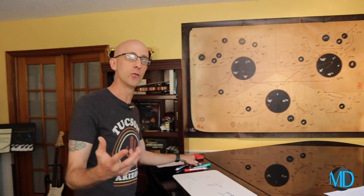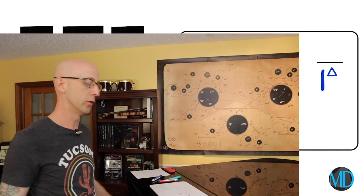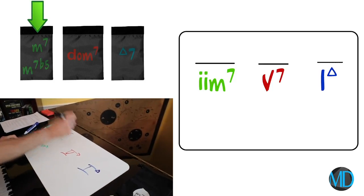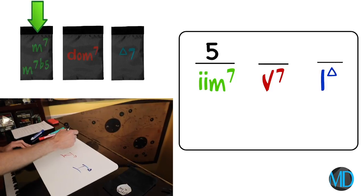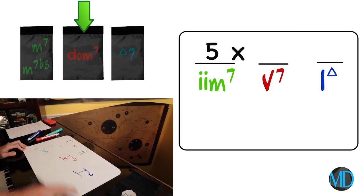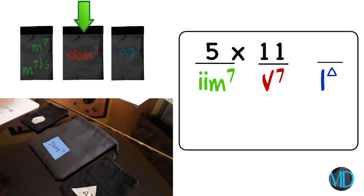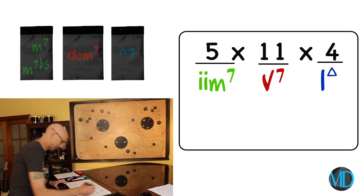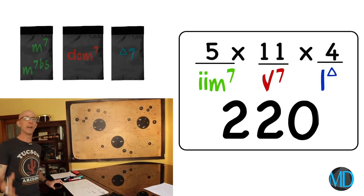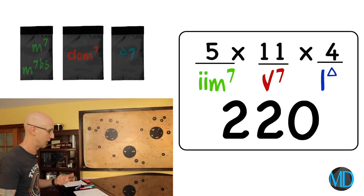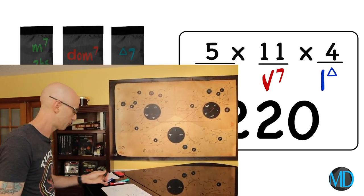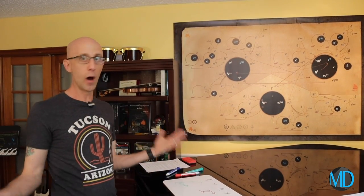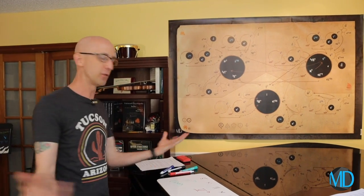If I do some math: five upper structures in that bag, eleven in the dominant seven bag, and four in the major seven bag, we get 220 options with just three chords and the upper structures we can pair with them. Let's go over to the piano and pick at random from the bag while blindfolded some of these chords and see what they sound like.